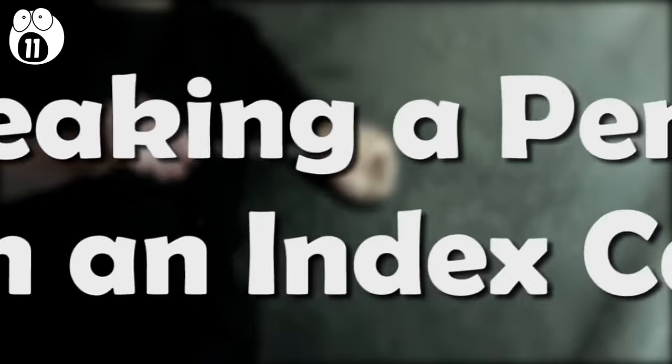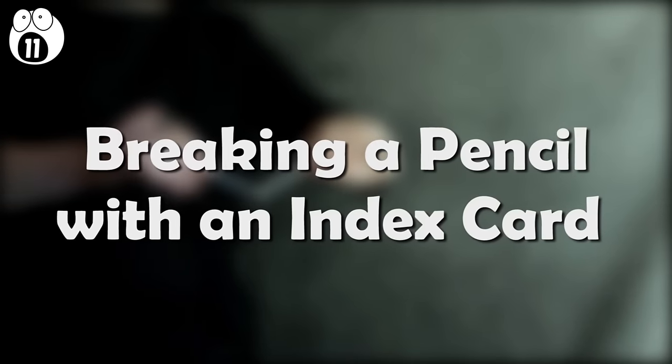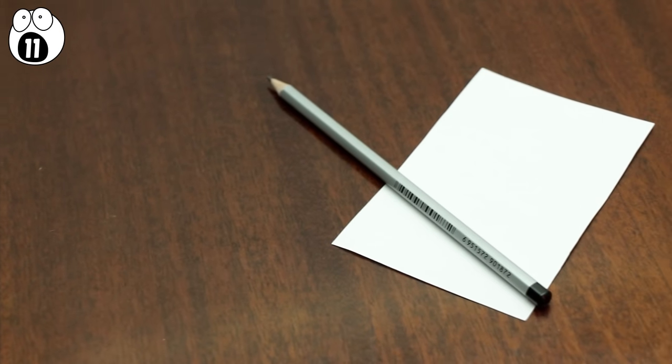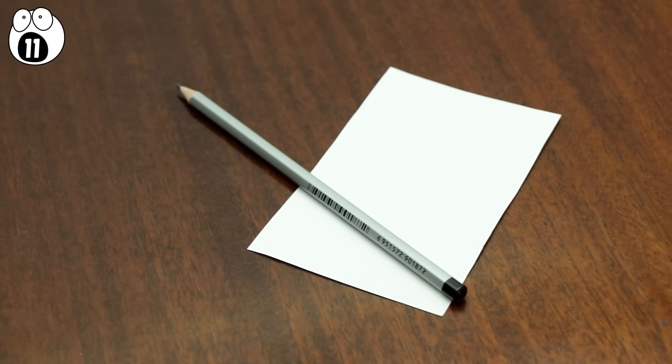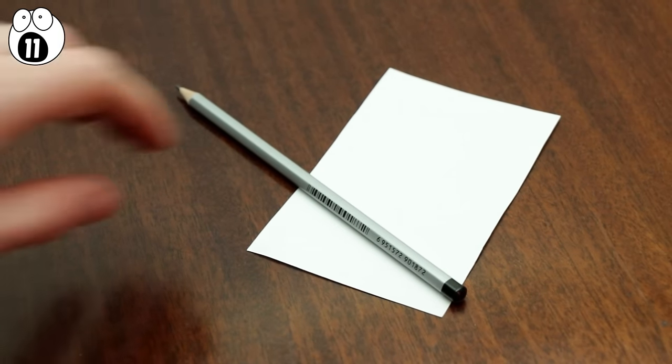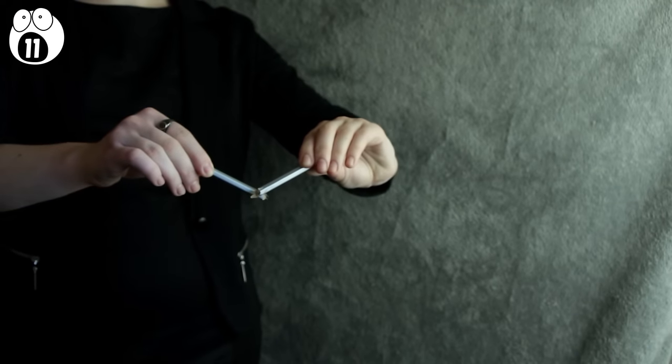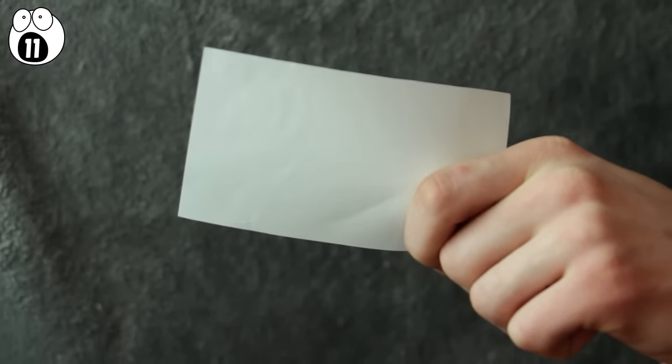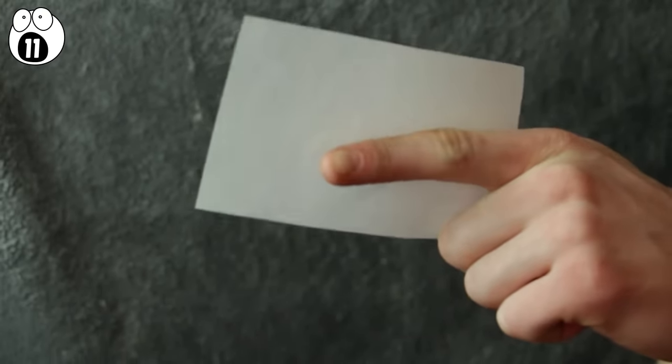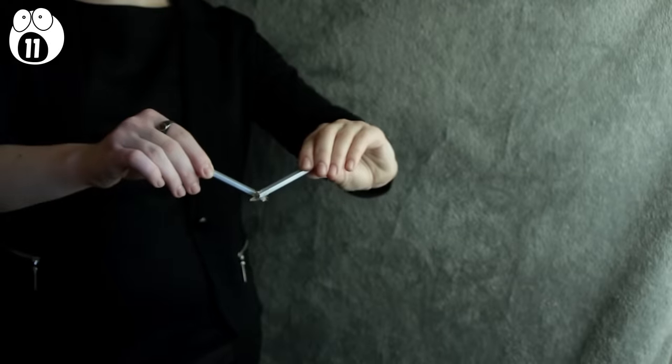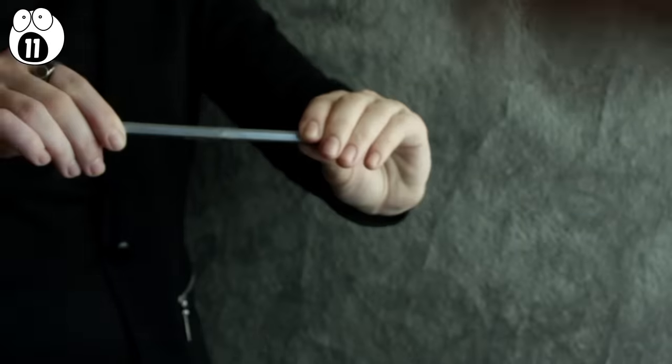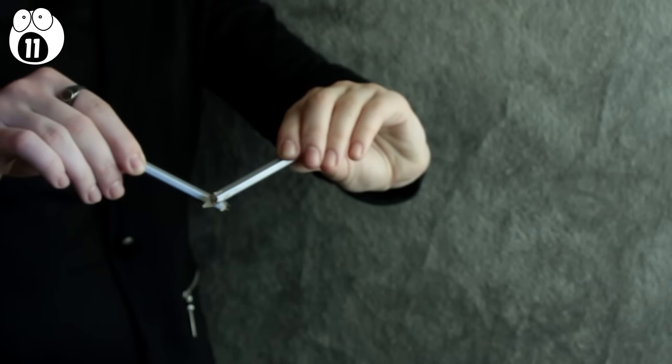Number 11. Breaking a pencil with an index card. This is another really simple trick that you could do with a regular old pencil and an index card. What you're going to do is break that pencil with the card. Get your delightful assistant to hold the pencil tightly. Swipe down with the card, and the pencil should break in two. Of course, you can't actually break the pencil with a piece of card, but what you're actually doing is quickly straightening your index finger as you swipe, and it's this that does the damage. It could hurt a little, but it's all worth it in the name of magic. Just make sure to apply ample power to your swipe.